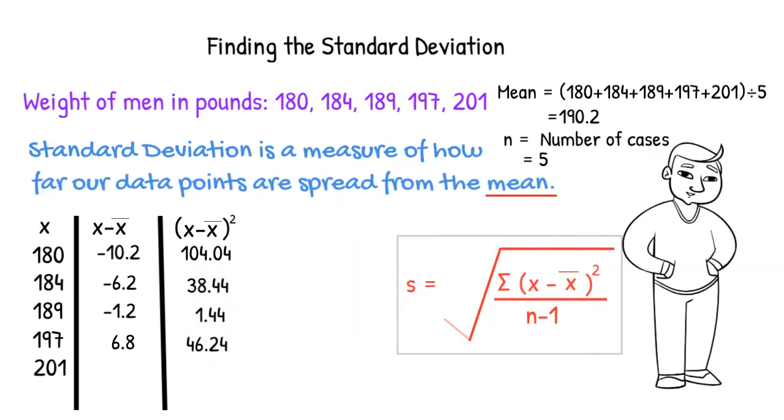201 minus the mean gives us 10.8. 10.8 squared gives us 116.64.